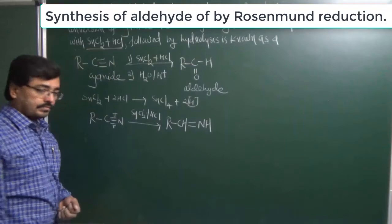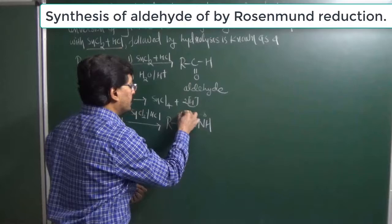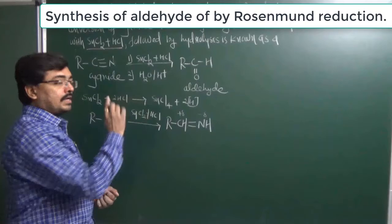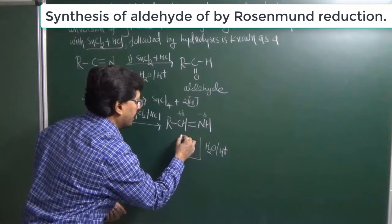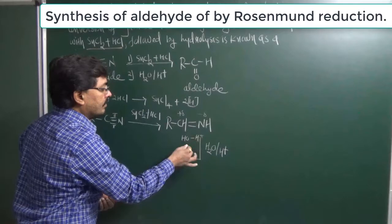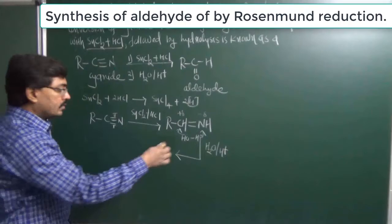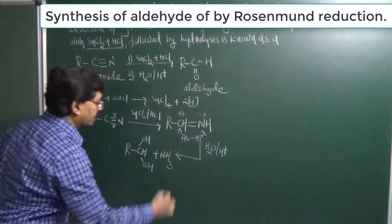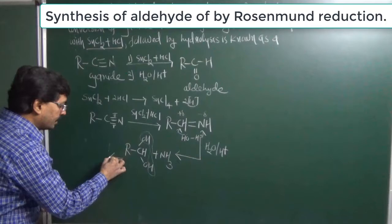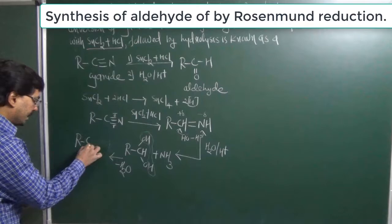The electronegativity of nitrogen is greater than carbon, so nitrogen carries a partial negative charge and carbon carries a partial positive charge. In the second step, hydrolysis is performed in acidic medium. Water gives H+ and OH−. The hydroxyl group attaches to carbon and H is added on nitrogen. Both bonds break, giving R-CH(OH)(OH) and NH3. Then elimination of water occurs, and as a result we get R-CHO — aldehyde is obtained.